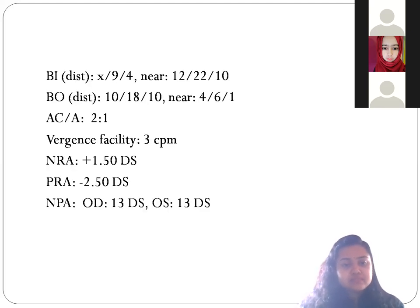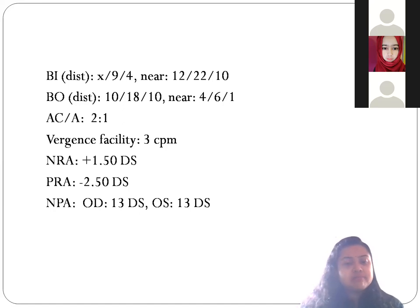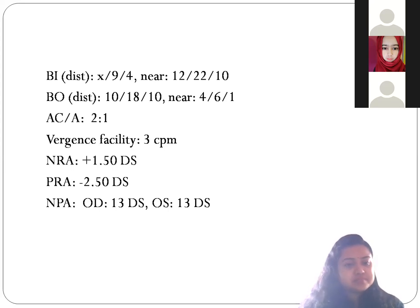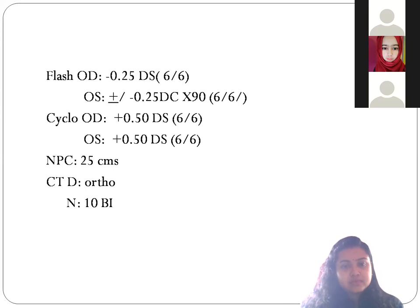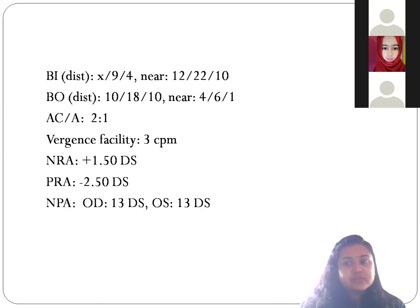The amplitude of accommodation should be around 15 diopters for the patient but we found 13 diopters both eyes. PRA value is normal. Base-in for distance is less, base-out for near is less. AC/A ratio is also less. The AC/A of 2:1 indicates an insufficiency case — in all insufficiency cases we get a lesser AC/A ratio, while in excess cases we get a greater AC/A ratio. The NPC is very much receded at 25 cm.